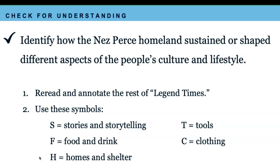For this check for understanding, you're going to identify how the Nez Perce homeland sustained or shaped different aspects of the people's culture and lifestyle. Your job is to reread and annotate the rest of Legend Times using these symbols: S for stories and storytelling, F for food and drink, H for homes and shelter, T for tools, and C for clothing. Pause the video now to complete this check for understanding. Join me again when you're ready to share the examples that you found.